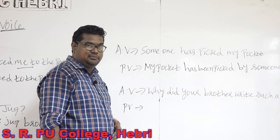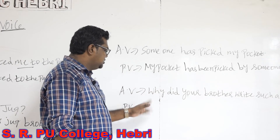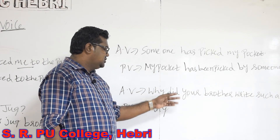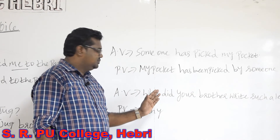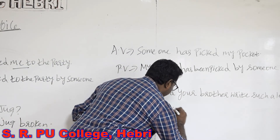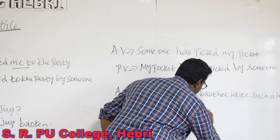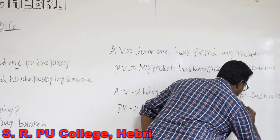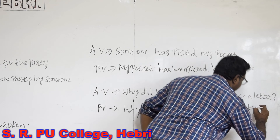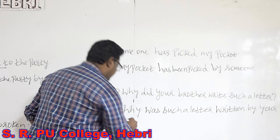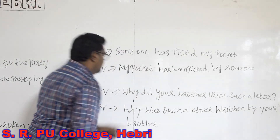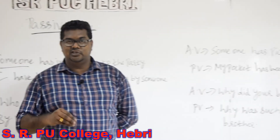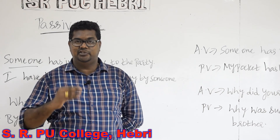Next sentence: Why did your brother write such a letter? When you change this into passive voice, first retain the word 'why' as it is. Then identify the main verb and its tense. The main verb is 'did write' and the tense is simple past, so the auxiliary available is 'was'. So: 'Why was such a letter written by your brother?' — using 'written' as the past participle of 'write', and 'your brother' becomes the object. In the next class, we shall discuss about the different types of objects and how those kinds of sentences can be changed from active to passive voice. Thank you students.